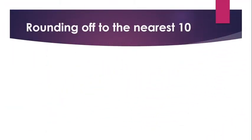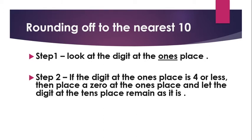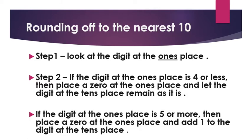Now the rules for rounding off to the nearest ten. First step: look at the digit at the ones place. Step 2: if the digit at the ones place is 4 or less, then place a 0 at the ones place and let the digit at the tens place remain as it is. And if the digit at the ones place is 5 or more, then place a 0 at the ones place and add 1 to the tens place digit.